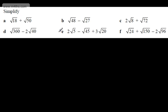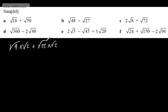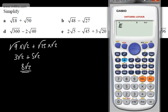These are slightly harder. We've got root 18 plus root 50. Root 18 is root 9 multiplied by root 2, plus root 50, which is root 25 multiplied by root 2. The more practice you get, the easier they become. This gives me 3 lots of root 2 plus 5 lots of root 2, so we end up with 8 root 2. You can check this on a calculator: root 18 plus root 50 does indeed give 8 root 2.